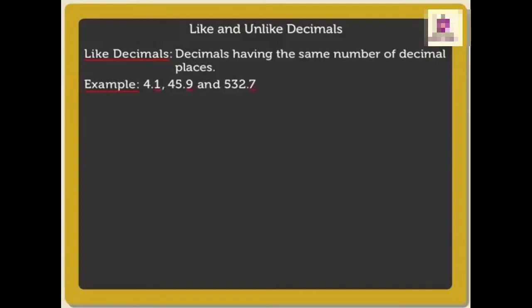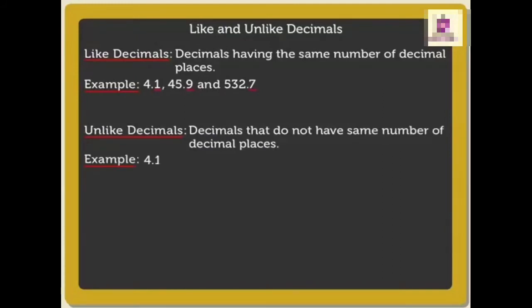So these are like decimals. Now, unlike decimals are decimals that do not have same number of decimal places. For example, 4.1, 12.34, and 6.345. These three numbers have different decimal places.